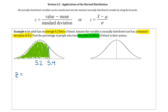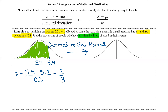First, we're going to transform that variable. So we do z equals x minus mu over sigma: that's 5.4 minus 5.2, all over 0.3, which comes out to two-thirds. What we're doing is taking our normal distribution curve and essentially moving it so it's now centered at 0, making it a standard normal distribution. Our mean is now at 0, and the value 5.4 becomes two-thirds.